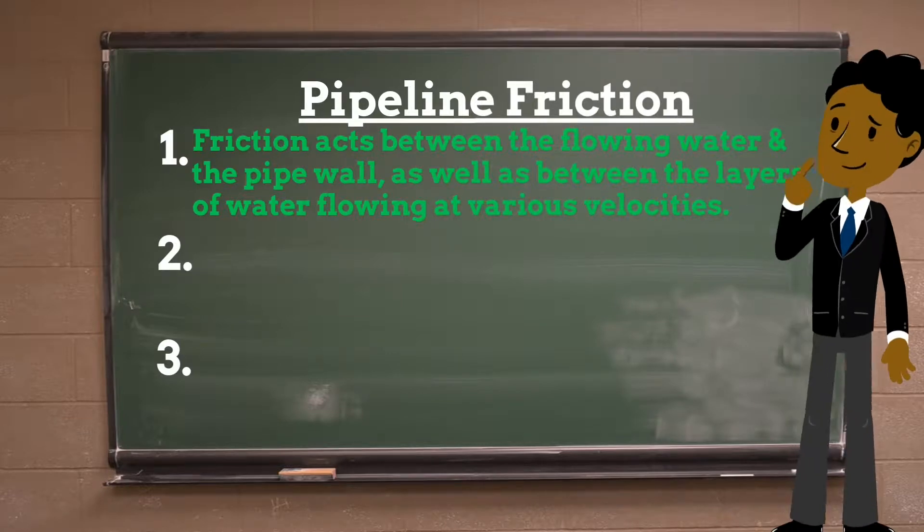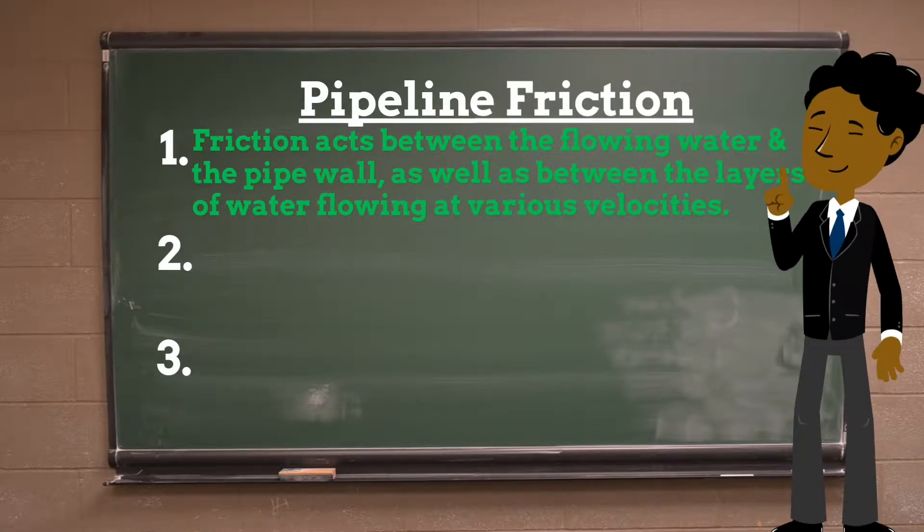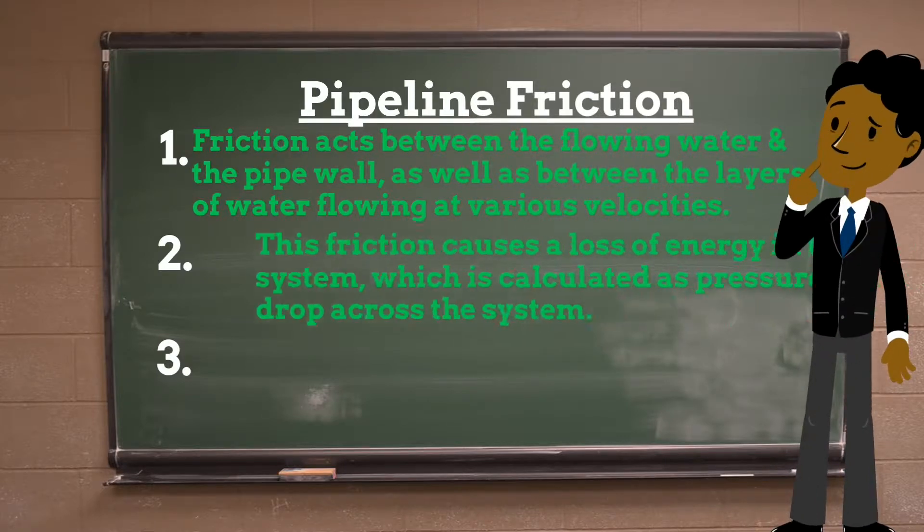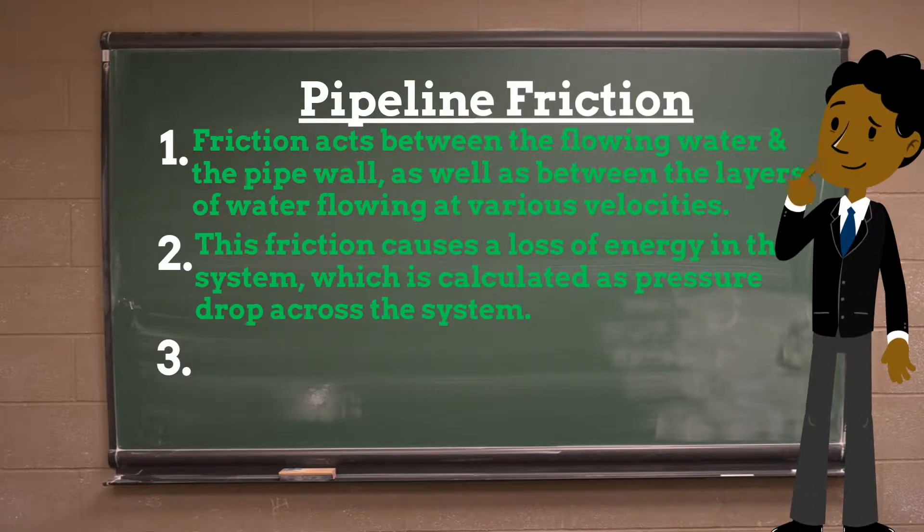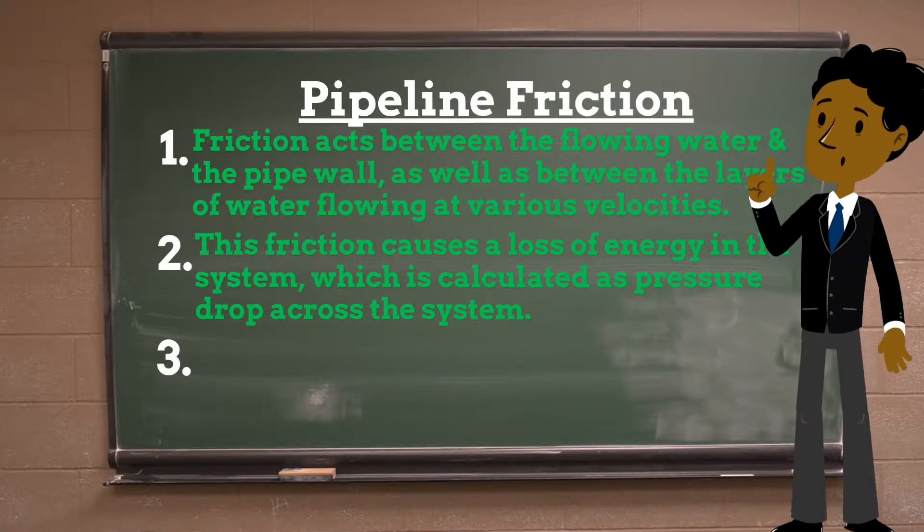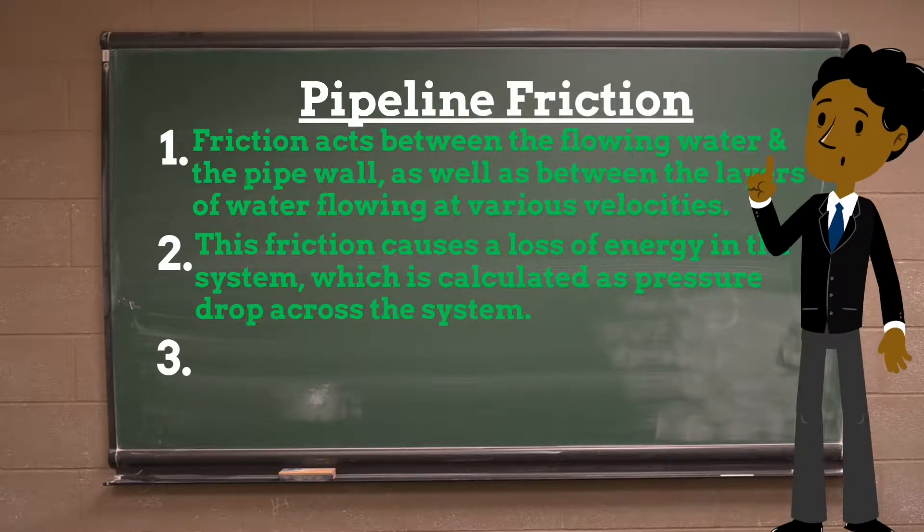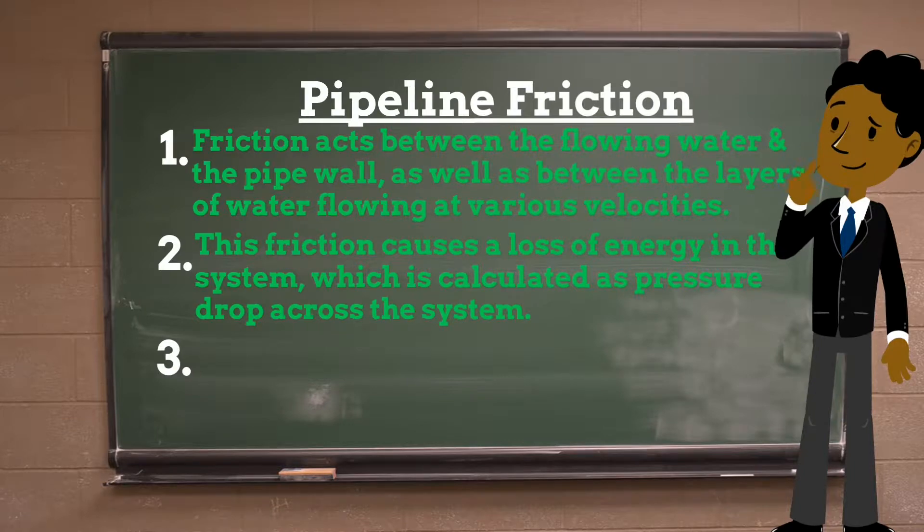The flow velocity is actually zero at the pipe wall and maximum along the center line of the pipe. The frictional resistance to flow causes a loss of energy in the system. This loss of energy is manifested as a continuous pressure drop along the path of flow. It is often necessary to be able to compute the expected pressure drop in a given system or to design a new system with a specified maximum pressure loss.